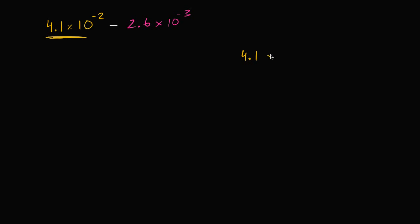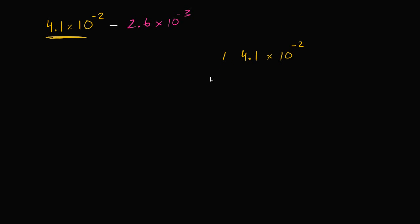We have 4.1 times 10 to the negative 2. If we want 10 to the negative 2 to go to 10 to the negative 3, we would divide by 10. But we can't just divide by 10 — that would change the value of the number. So we multiply by 10 as well, writing it as 10 over 10 times the expression. Then 10 times 4.1 is 41, and 10 to the negative 2 divided by 10 is 10 to the negative 3. So this equals 41 times 10 to the negative 3.